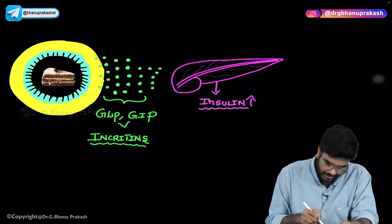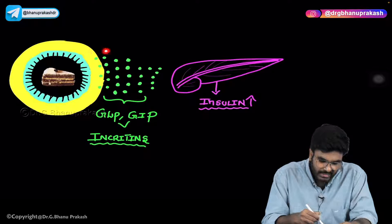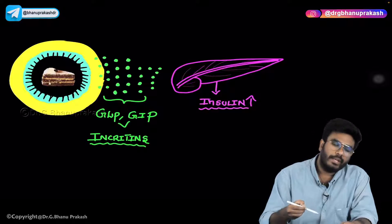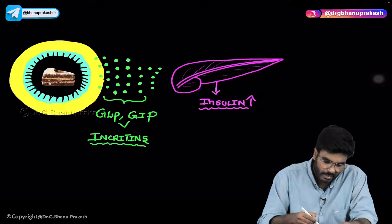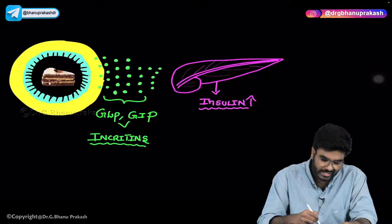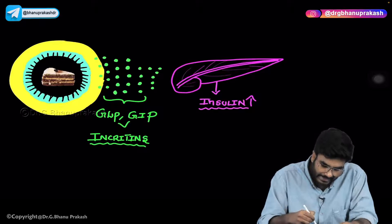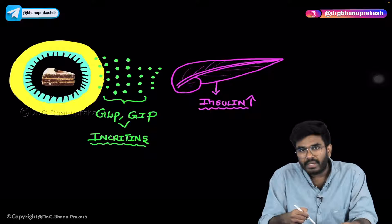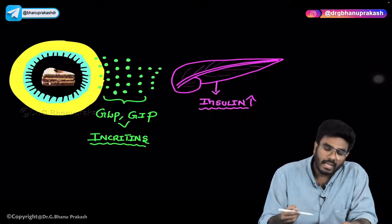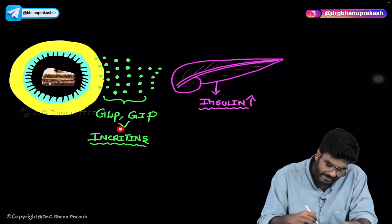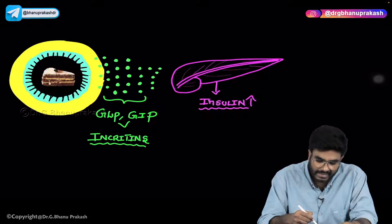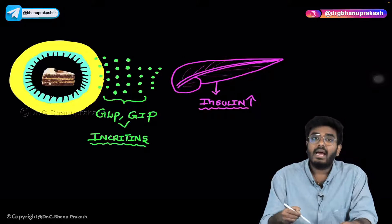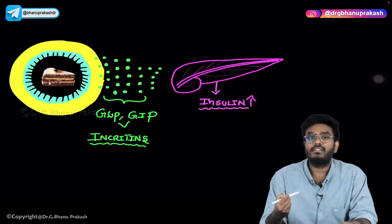Whenever you eat food, your GIT — the wall of the GIT specifically — is going to produce certain chemicals. What are these chemicals? Something like GLP, glucagon-like peptide, and gastric inhibitory peptide. These glucagon-like peptide and gastric inhibitory peptides come from the wall of the GIT and these substances are called incretins. These incretin molecules will act on the pancreas and increase the secretion of insulin.